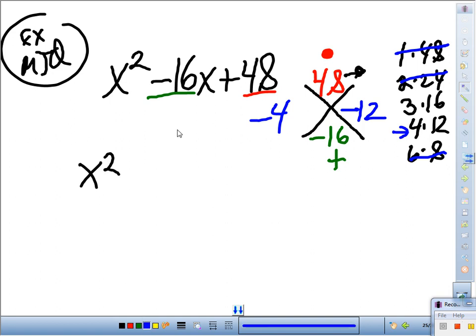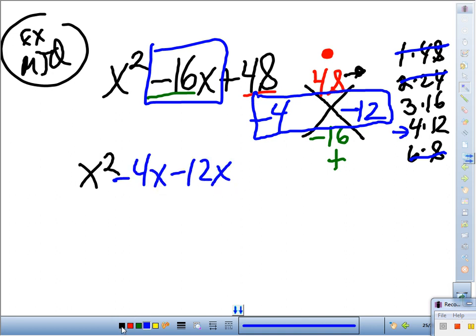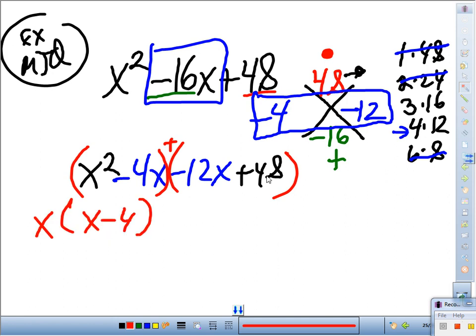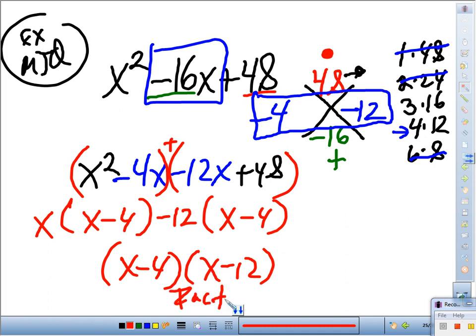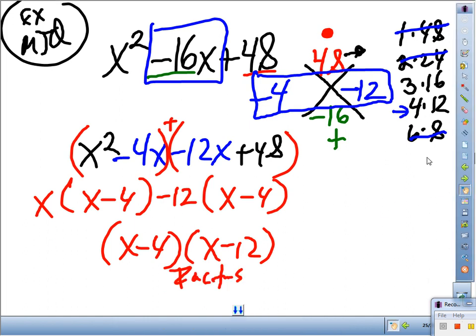So, let's rewrite this. X squared. And instead of writing negative 16, what am I going to write? Negative 4x, negative 12x plus 48. Group, group. Remember to include that negative there. GCF for these two is x. We're left with x minus 4. GCF for these two is 12, but this one has a negative on the first term, so it's negative 12. So, we're left with x minus 4. Factors are x minus 4, x minus 12, and those are my factors.